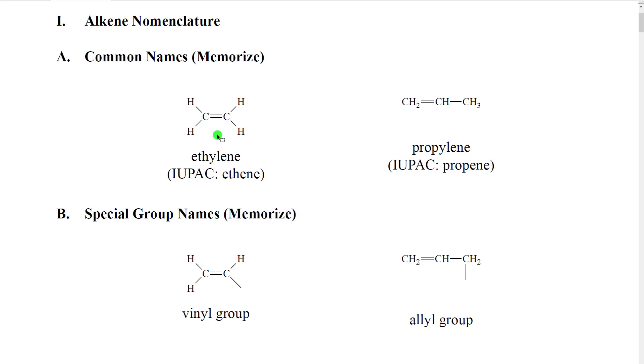The first one is this one. This is the two-carbon alkene. It's the smallest alkene that we can have. It's called ethylene. The IUPAC for this is ethene. You can see really the only difference is that we have this extra Y-L in there.